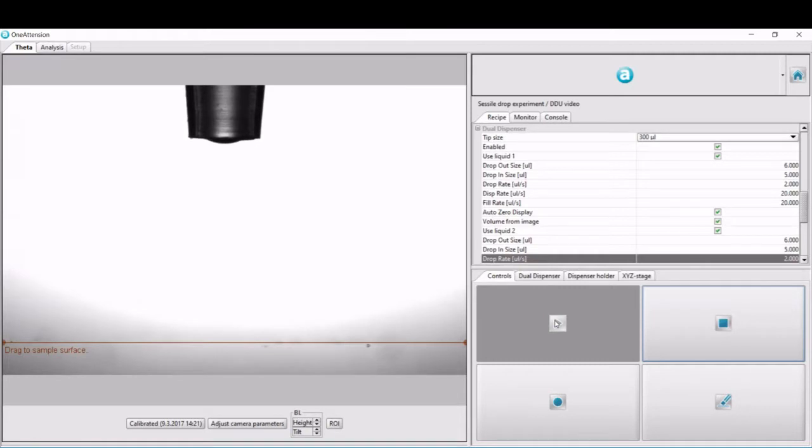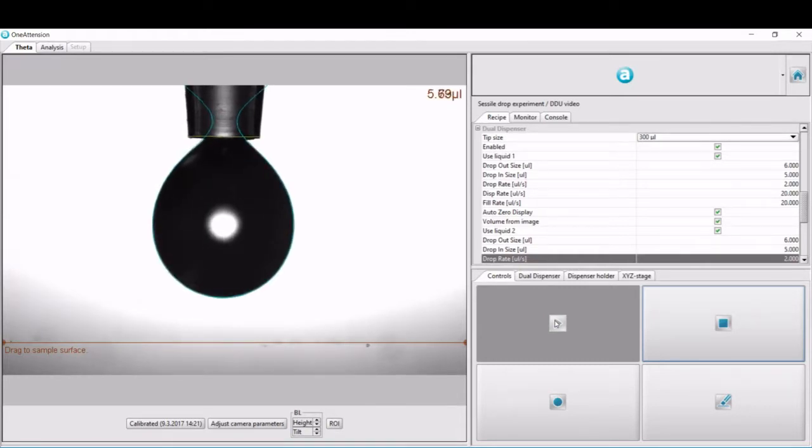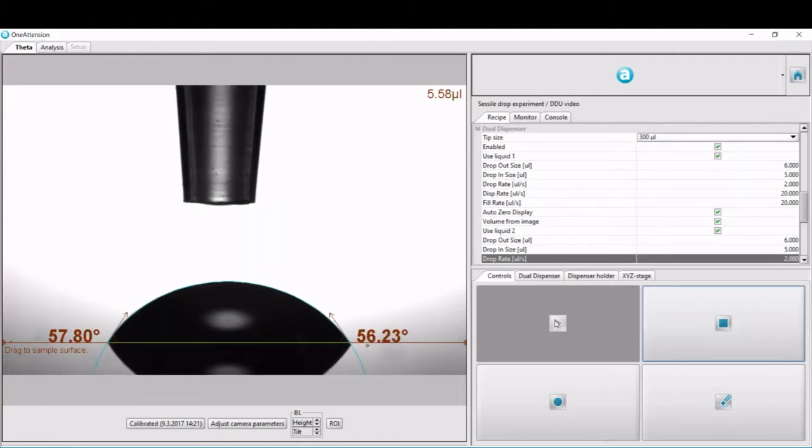In OneAttension software, when you start the measurement, the software automatically creates a droplet of desired size, places that on the sample surface, and analyzes the contact angle of the droplet.